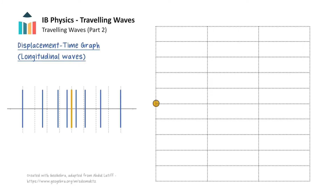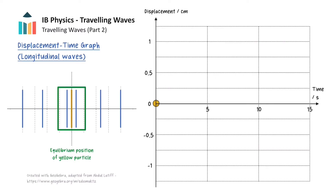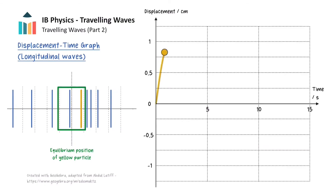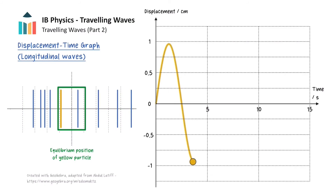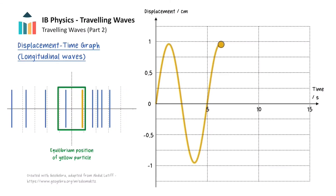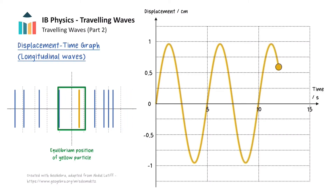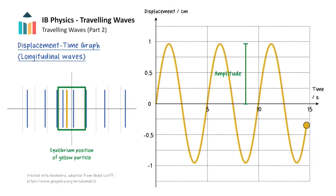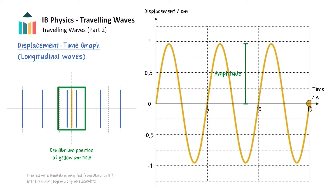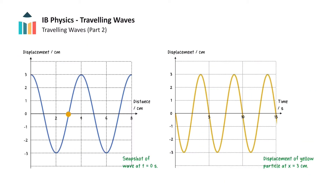We will repeat a similar procedure for longitudinal waves. We want to focus on the motion of a single particle in the medium, such as this yellow one, and track the position against time for our particle. Time will once again be on our x-axis, and displacement will be on the y-axis, where we choose displacements to the right to be positive. This animation will now draw out the displacement time graph. Notice again how the displacement against time graph for a longitudinal wave is a graph of a particle undergoing simple harmonic motion, and is sinusoidal in shape. The amplitude for our wave is just under 1cm, and the period is 5 seconds.